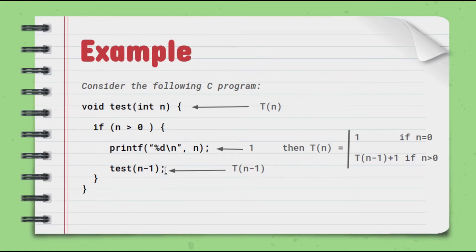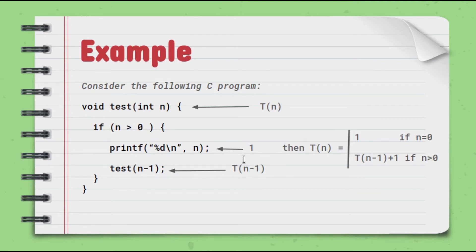Please make sure you have already watched the tutorial on recursion before jumping into this. Now, we are calling the function back with n minus 1 each time. So after the print, we call test(n-1), and the time taken by that call is C(n-1). We can write: C(n) = C(n-1) + 1 when n is greater than 0.